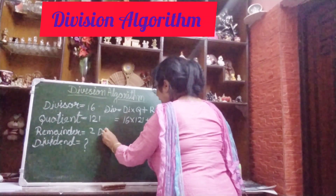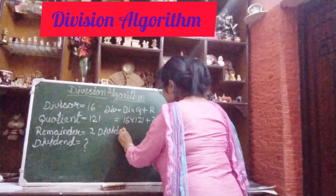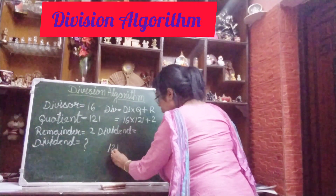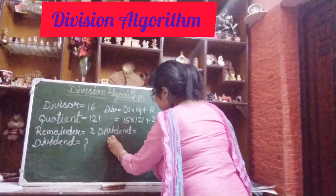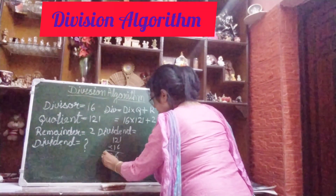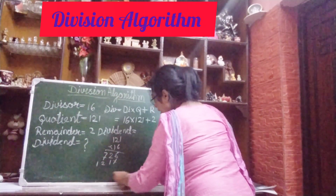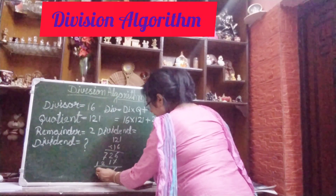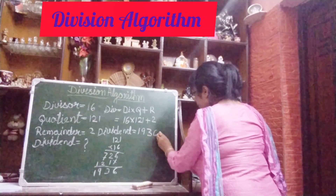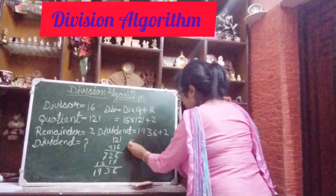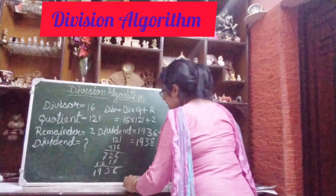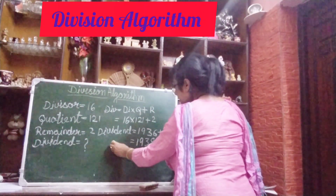Now we will find the dividend. You will multiply these two numbers — 121 multiplied by 16 — in your rough work or in the fair copy. Doing the multiplication: 121 × 16 gives us 1936. Then 1936 plus 2 equals 1938. So this is our dividend — 1938.